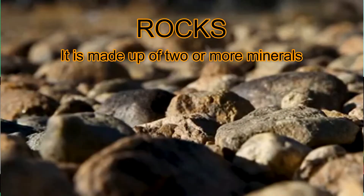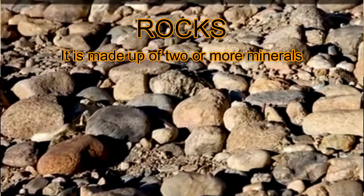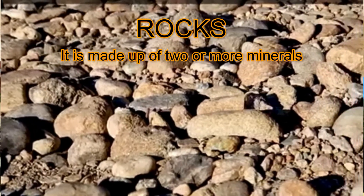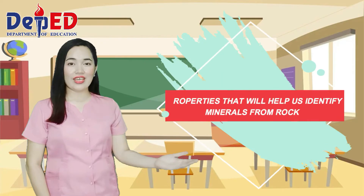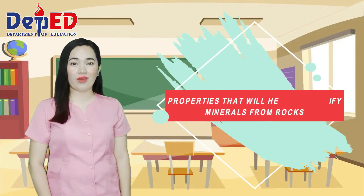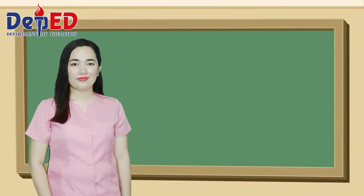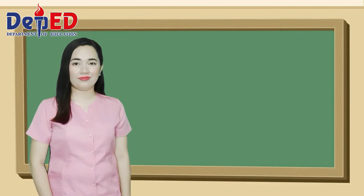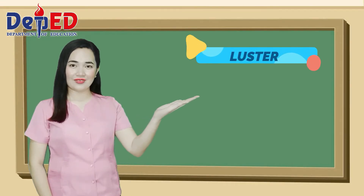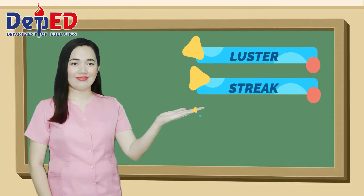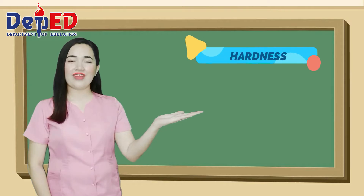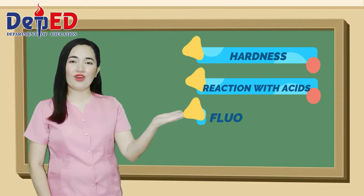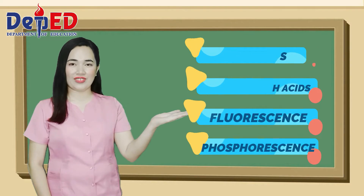Rocks are usually made up of two or more minerals. There are properties that will help us identify a mineral from rocks. These properties are luster, streak, cleavage and fracture, density, hardness, reaction with acids, fluorescence, and phosphorescence.